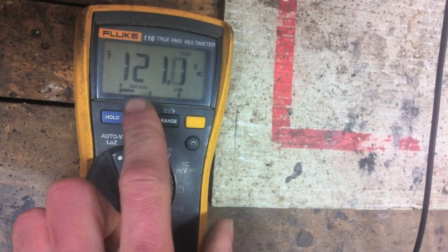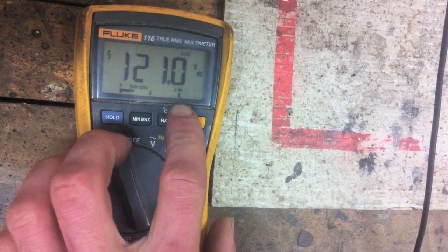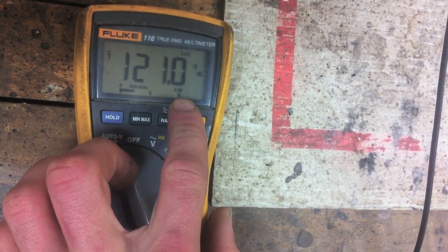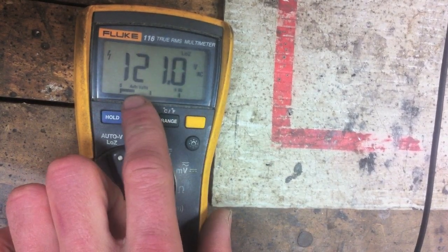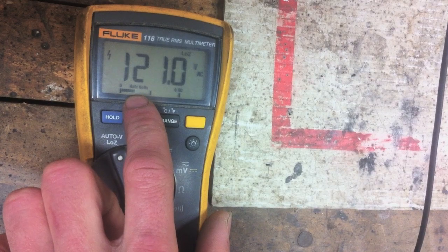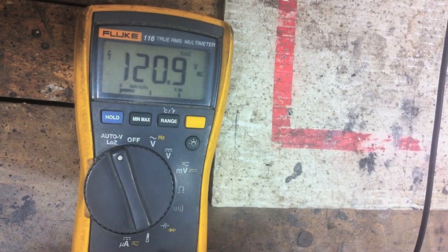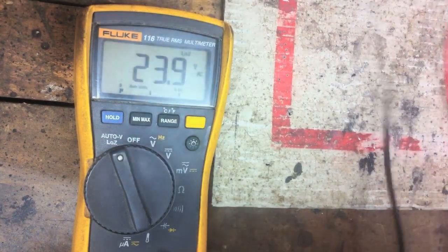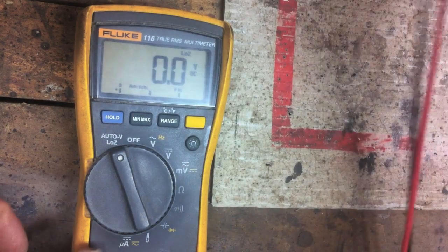What I like about this meter as well is it's got a bar graph here. So the range that it's in now is 0 to 600. So it's showing you it's at 120 volts here, 121.